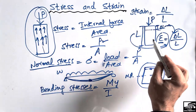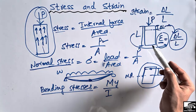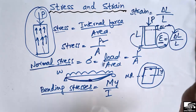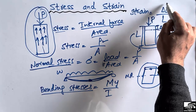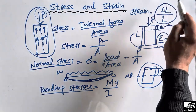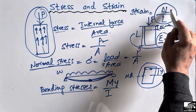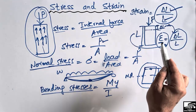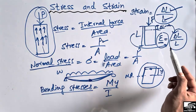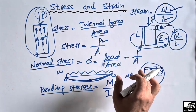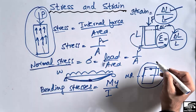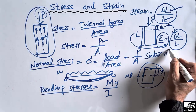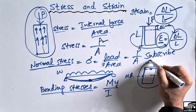Strain is a ratio with no unit — it is simply the ratio of change in length to the original length of the object. I hope you guys understand the basic concept of stress and strain. Don't forget to subscribe to our channel for daily civil engineering videos. Thank you for watching.